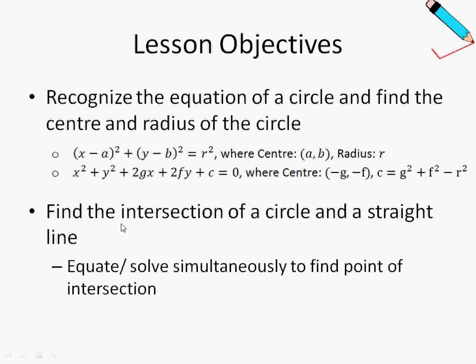The next objective is to find the intersection of a circle and a straight line. So how do we do this? We will equate or solve simultaneously to find this point of intersection.